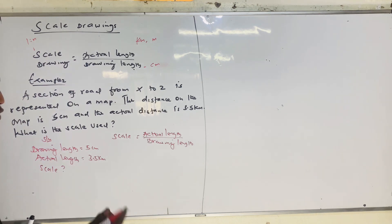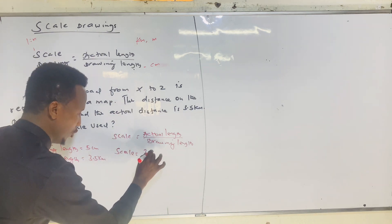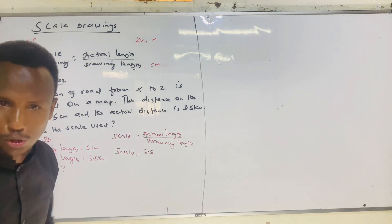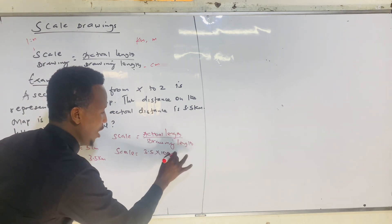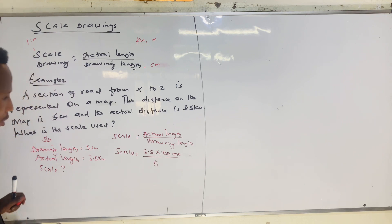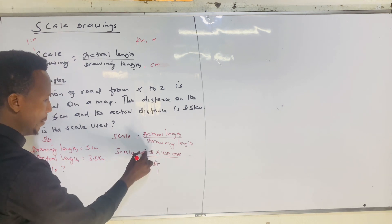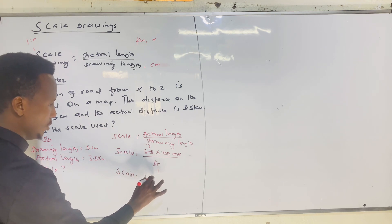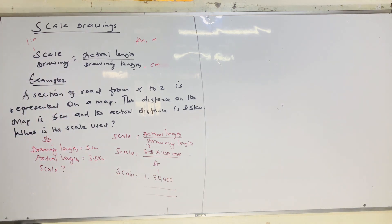The actual distance is 3.5 km. We need to convert it to centimeters. One kilometer equals 100,000 centimeters, so 3.5 km equals 350,000 centimeters. Dividing by the drawing length of 5 gives 70,000. So the scale is 1 to 70,000.